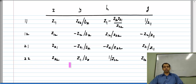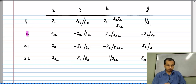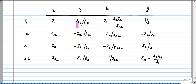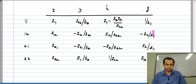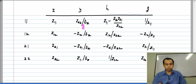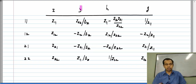Here I have tabulated the relationship between different parameter sets. I have listed parameters 11, 12, 21, and 22, taking Z parameters as the primary means of representation and expressing all other two-port parameters in terms of Z parameters. For instance, Y11 turns out to be Z22 divided by delta-Z, where delta-Z is the determinant of the Z parameter matrix. Similarly, Y12 turns out to be minus Z12 over delta-Z, Y21 is minus Z21 over delta-Z, and Y22 is Z11 over delta-Z.